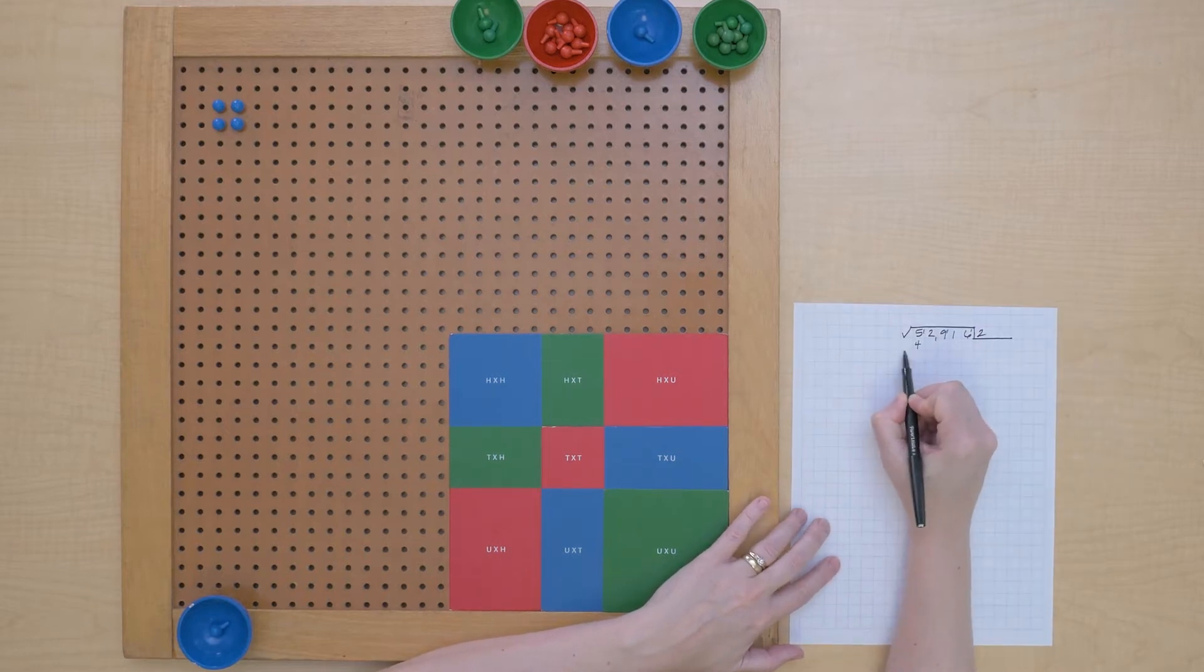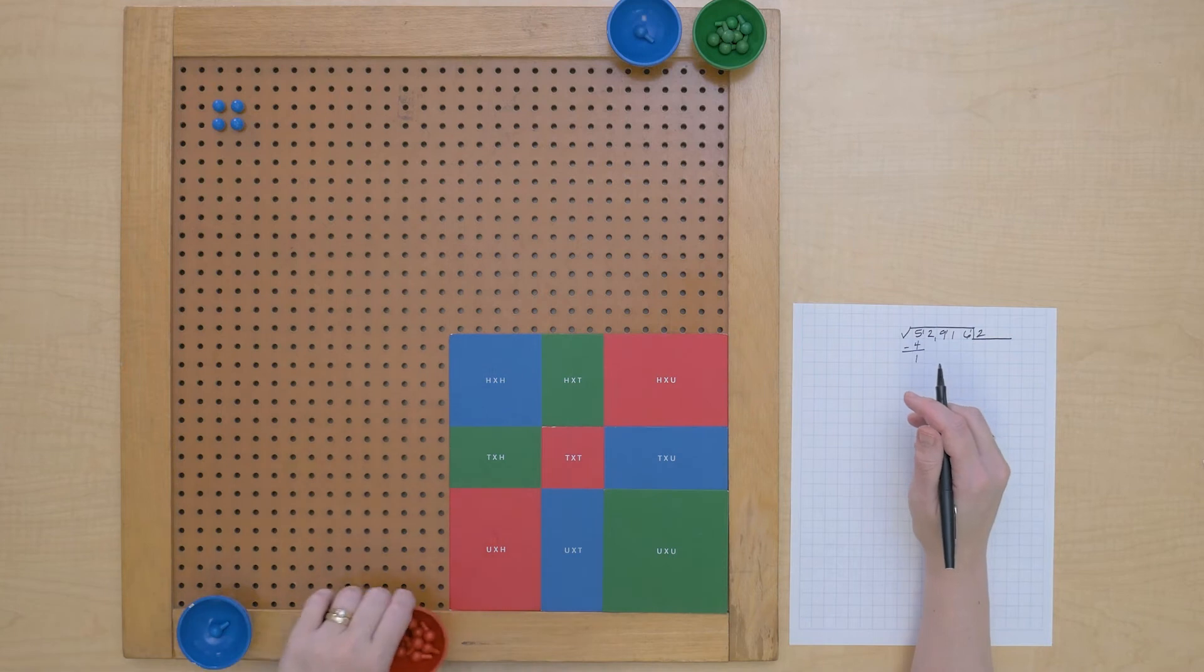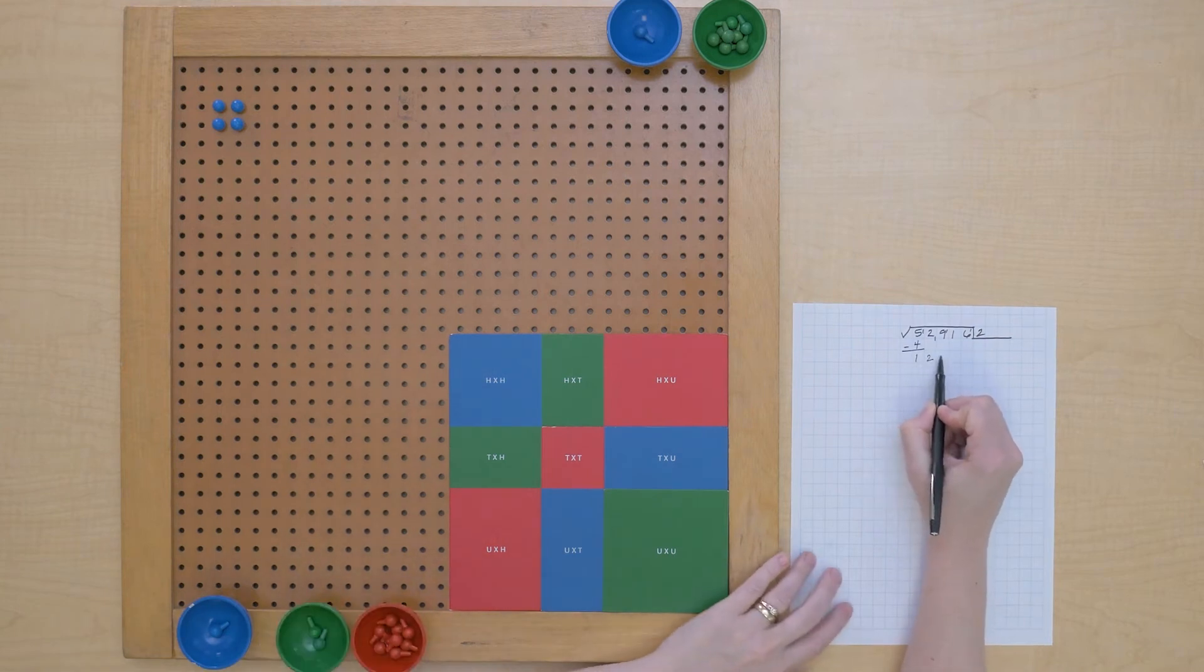We had five ten thousands, we used four. We should have one left. And I'll bring down our next period. Let's bring it down here on paper.